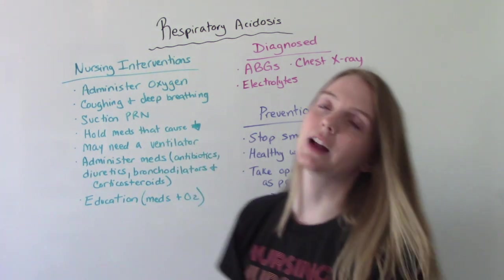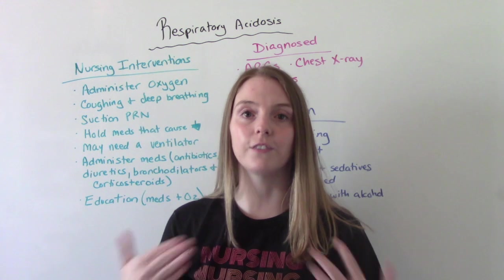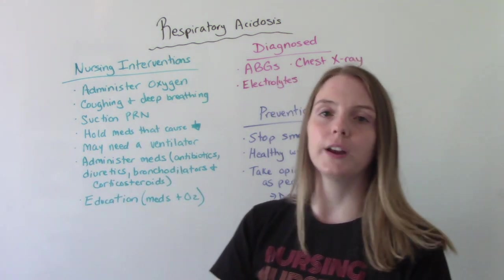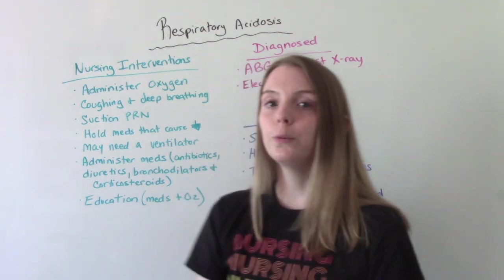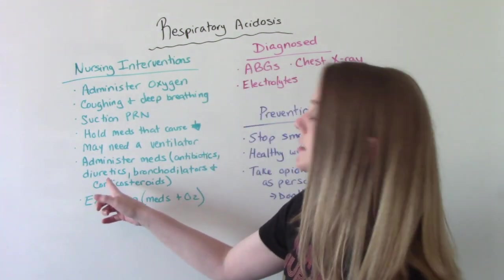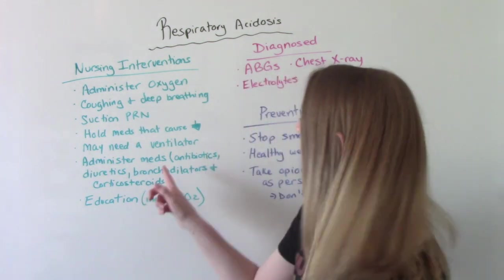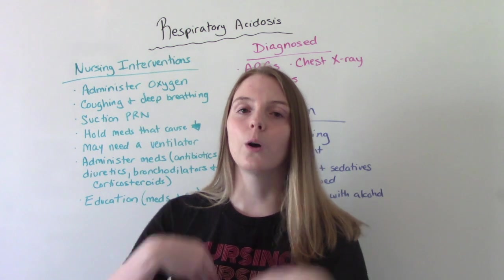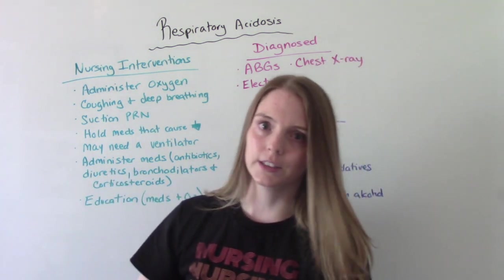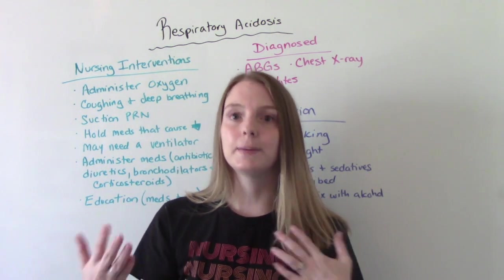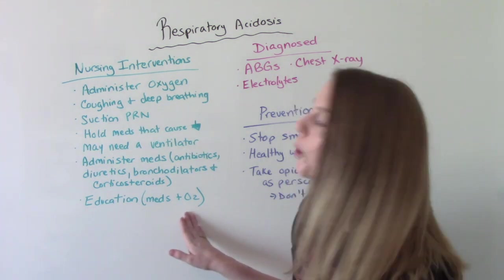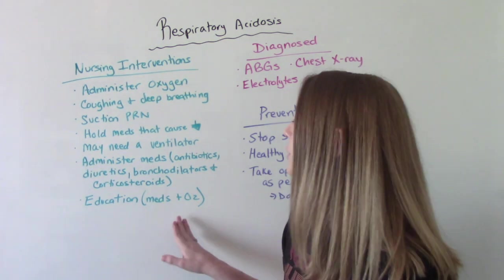The patient may need to be placed on a ventilator because they're not controlling their respirations normally — the ventilator will do that for them, though we don't always have to do that. Administer medications based on the cause: for pneumonia, antibiotics; for pulmonary edema with too much fluid in the lungs, diuretics; for an asthma situation, bronchodilators and corticosteroids. Finally, education when they're ready for it — not during an acute attack, but when they're ready for discharge: taking medications appropriately, and if they go home on oxygen therapy, safety and proper use of home oxygen.